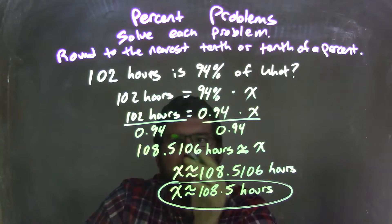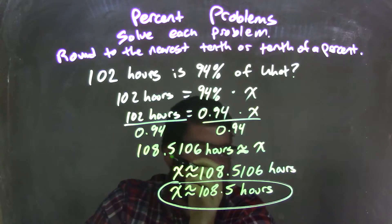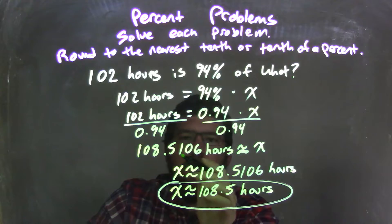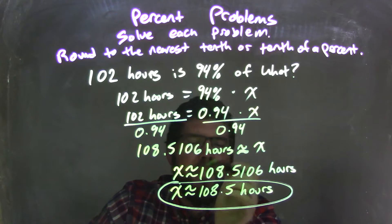Then I divide by 0.94 on both sides, leaving me with, in my calculator, 102 divided by 0.94, which is approximately 108.5106 hours.